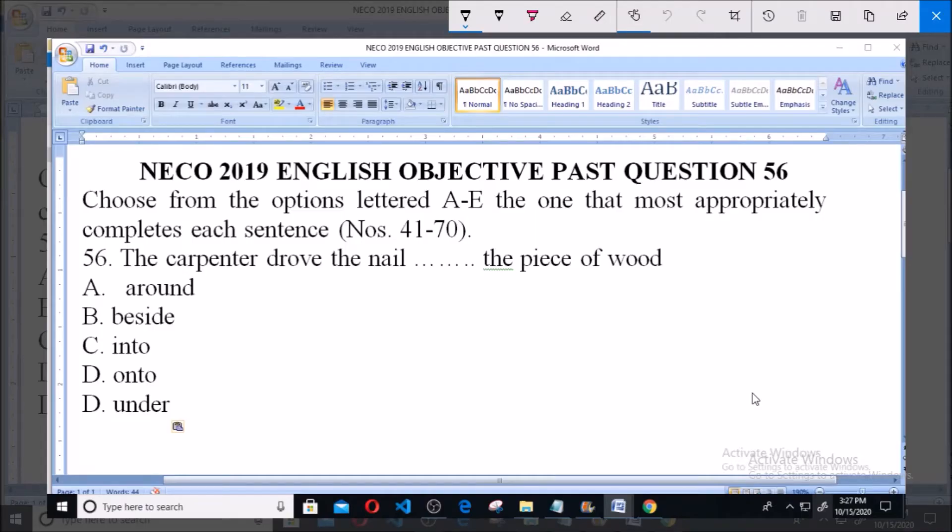Hello and welcome. This is NECO year 2019 English objective past question, question number 56. The instruction says choose from the options lettered A to E the one that most appropriately completes each sentence, and this instruction is to answer questions 41 to 70.